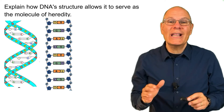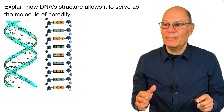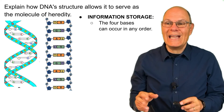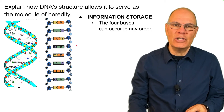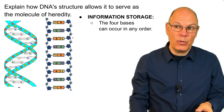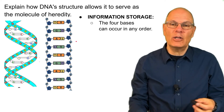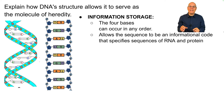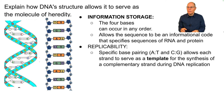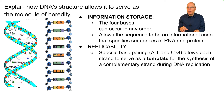Explain how DNA's structure allows it to serve as the molecule of heredity. Starting with information storage: the four bases can occur in any order — there could be three A's in a row, followed by two C's, followed by a T, and so on. The sequence isn't determined by DNA's chemistry, which allows the sequence to be an informational code specifying sequences of RNA and protein. Regarding replicability, the specific base pairing — A with T, G with C — allows each strand to serve as a template for the synthesis of a complementary strand during DNA replication.